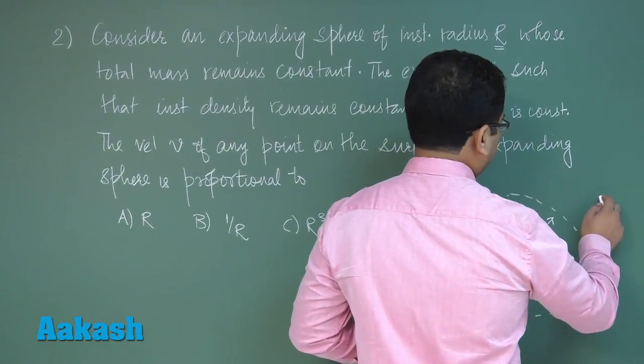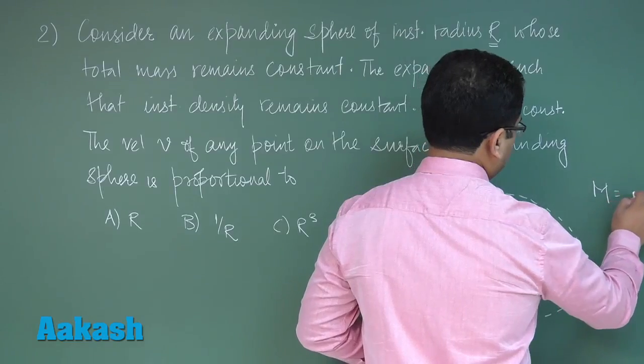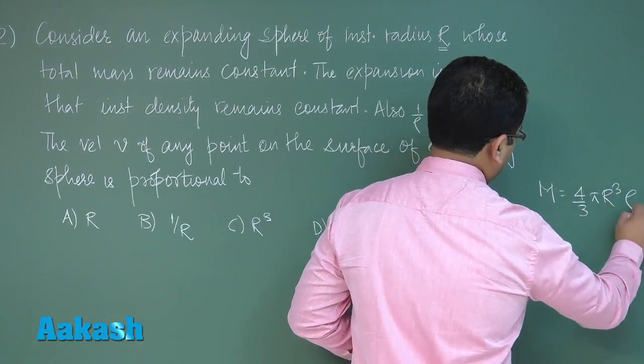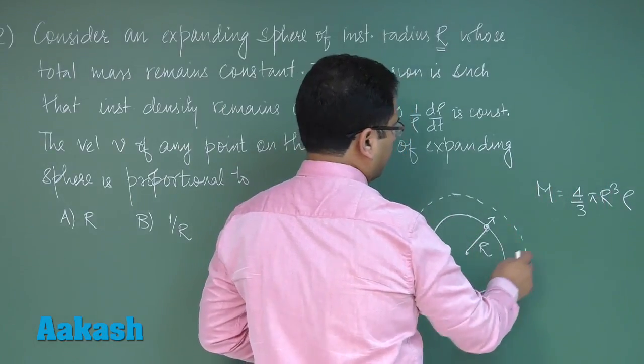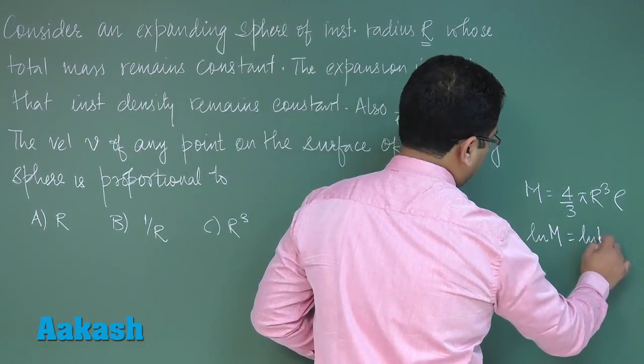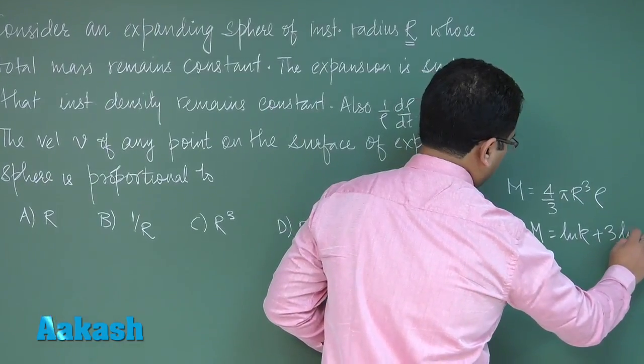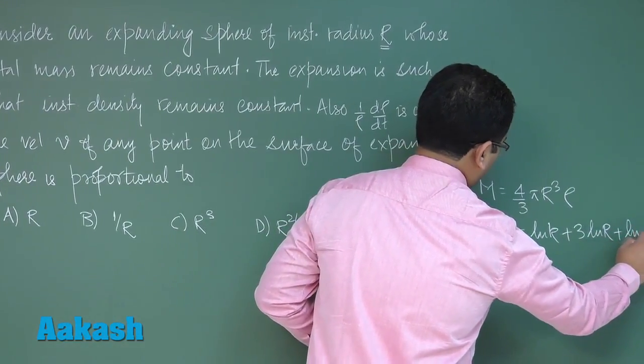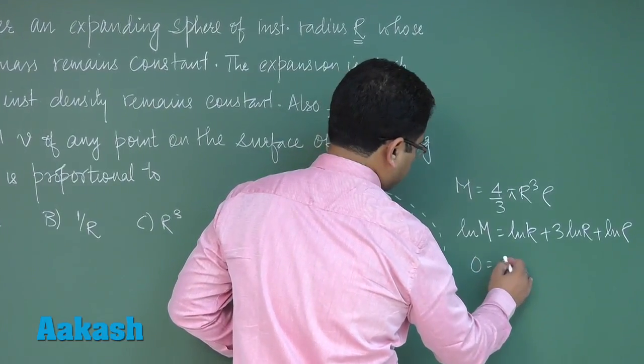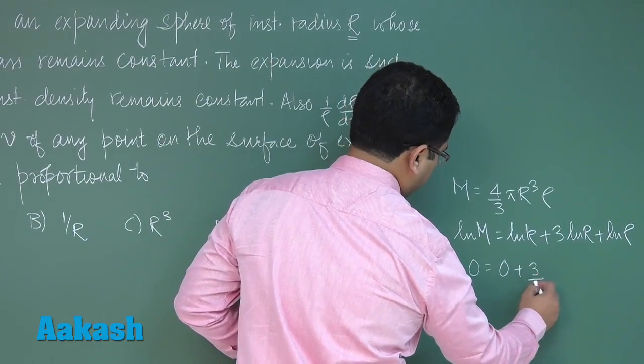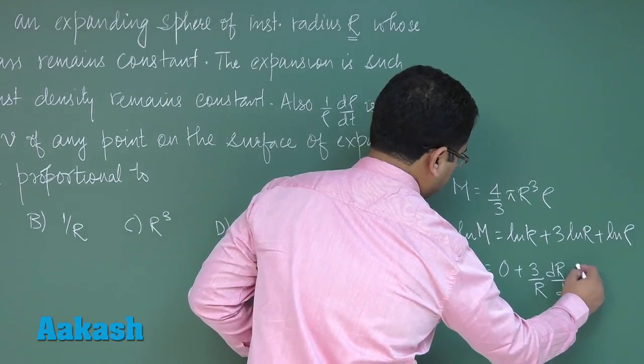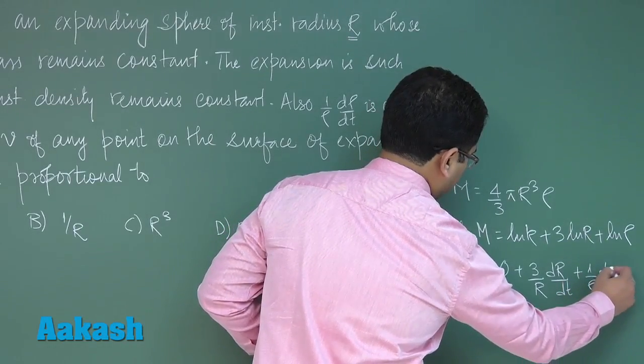Let's see. I can write m = (4/3)πR³ × density ρ in product form. So let me directly go with the log. That would be log k + 3 log R + log ρ. Now I can differentiate: 0 = 0 + 3/R × dR/dt + 1/ρ × dρ/dt.